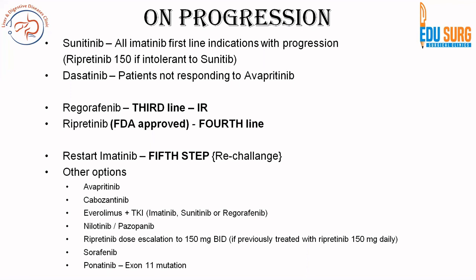Third-line therapy consists of radiology interventions and regorafenib. If you have liver lesions, interventional techniques can be used, as we will see in the next slide, and regorafenib is the medical management third-line therapy. As already stated, ripretinib is the fourth-line medical therapy. Patients should have received at least three tyrosine kinase inhibitors before starting ripretinib.